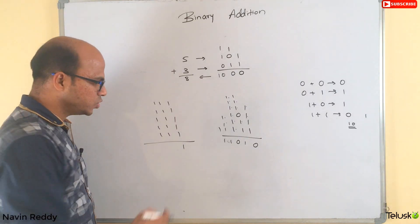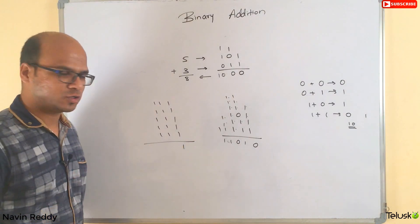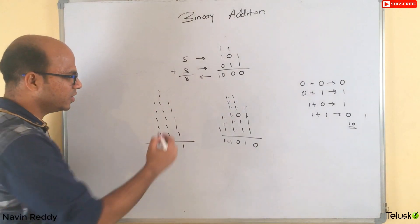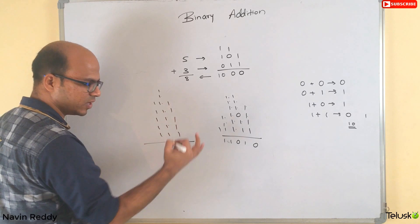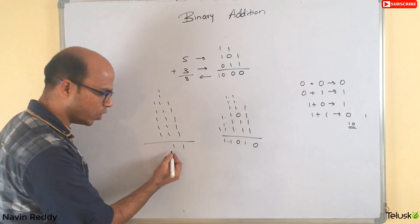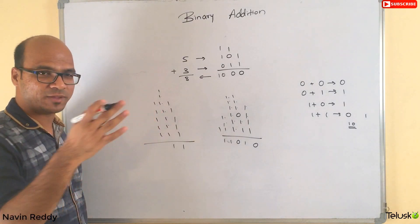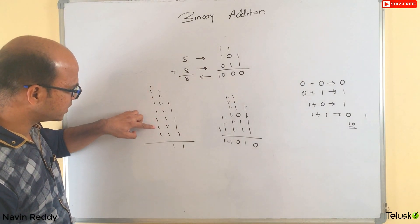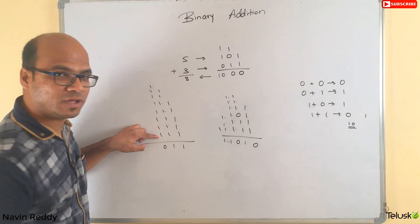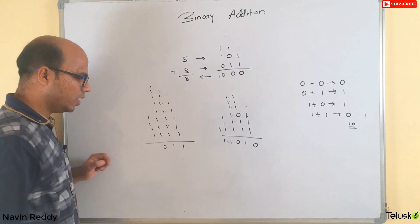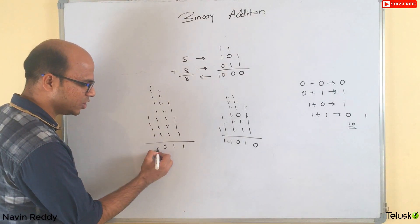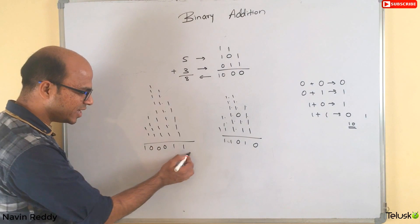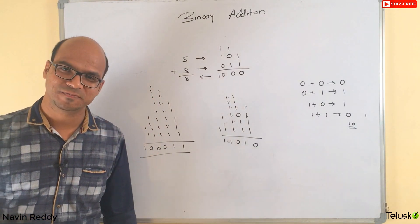To find how much to carry, divide the count of ones by two and take the integer part. Five ones divided by two equals two, so carry two. Seven ones is odd so result is one, and seven divided by two is three, so carry three. Eight ones is even so result is zero, eight divided by two is four, so carry four. And two ones: even so result is zero, carry one. That gives the final answer.